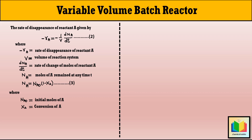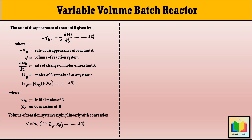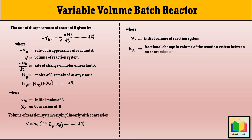In a variable volume batch reactor, the volume of the reaction system changes as the reaction proceeds, and it varies linearly with conversion. Therefore we can write: V = V0 × (1 + εA·XA), where V0 is the initial volume of the reaction system, and εA is the fractional change in volume of the reaction system between no conversion and complete conversion of reactant A.